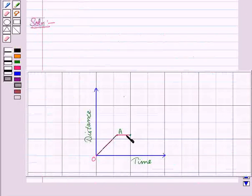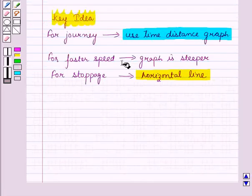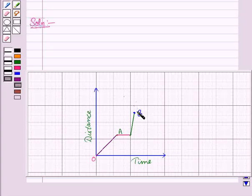Now when we hire a cab, their speed will be higher. So after this stoppage, we will draw a line to represent faster speed. Now from key idea, we know that for faster speed, graph is steeper. So we make a steeper straight line and reach the point B where they stop for some time.